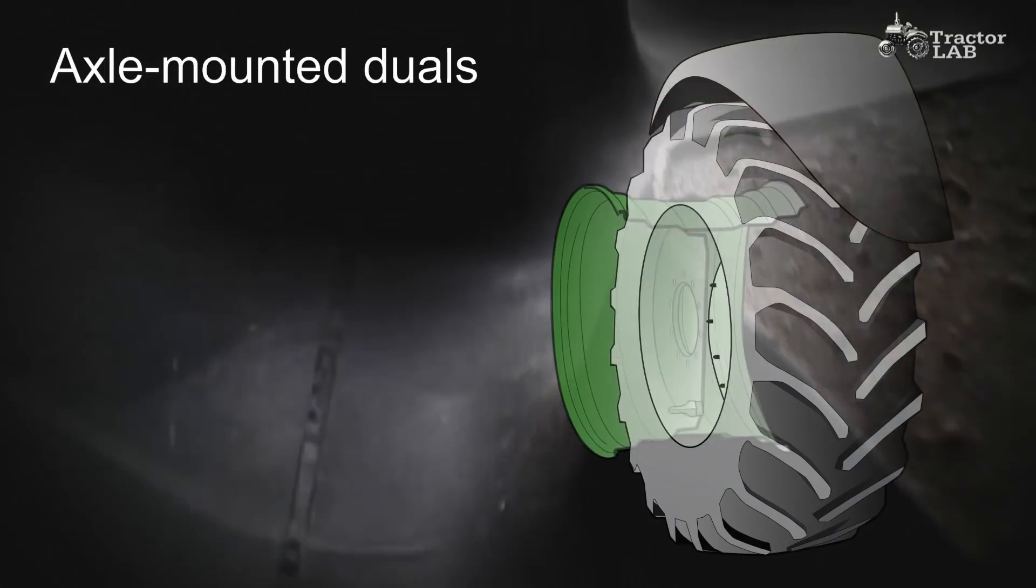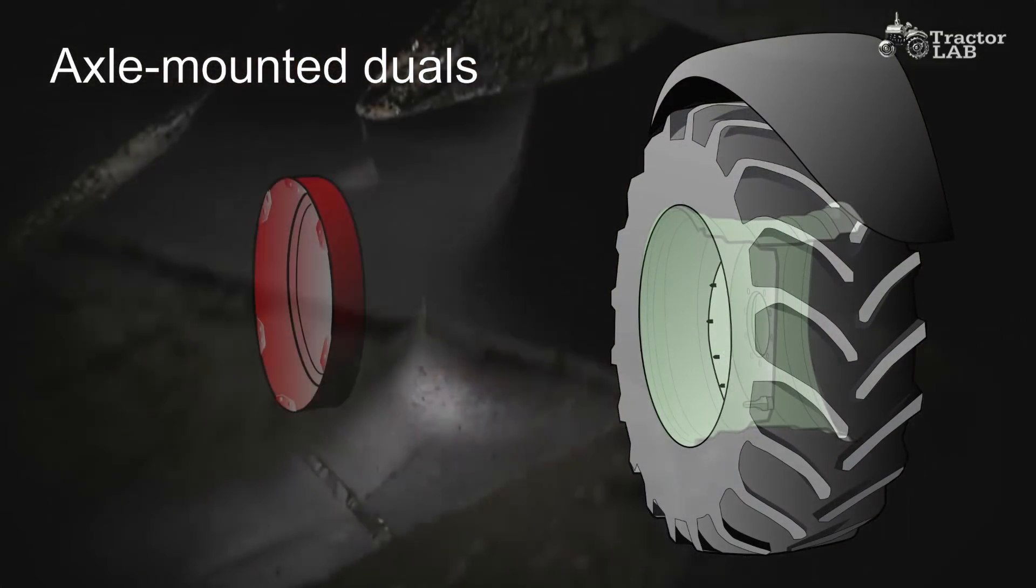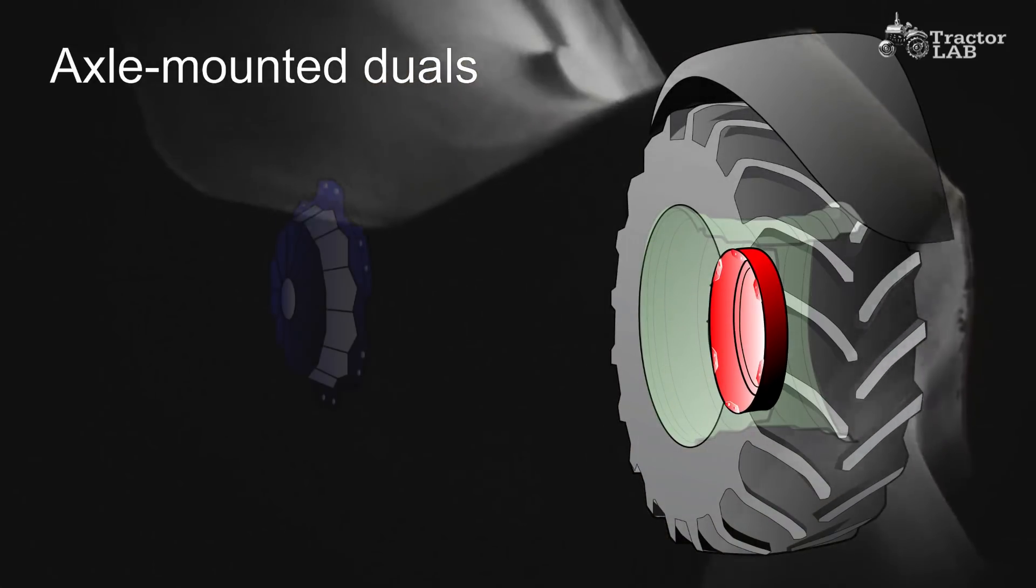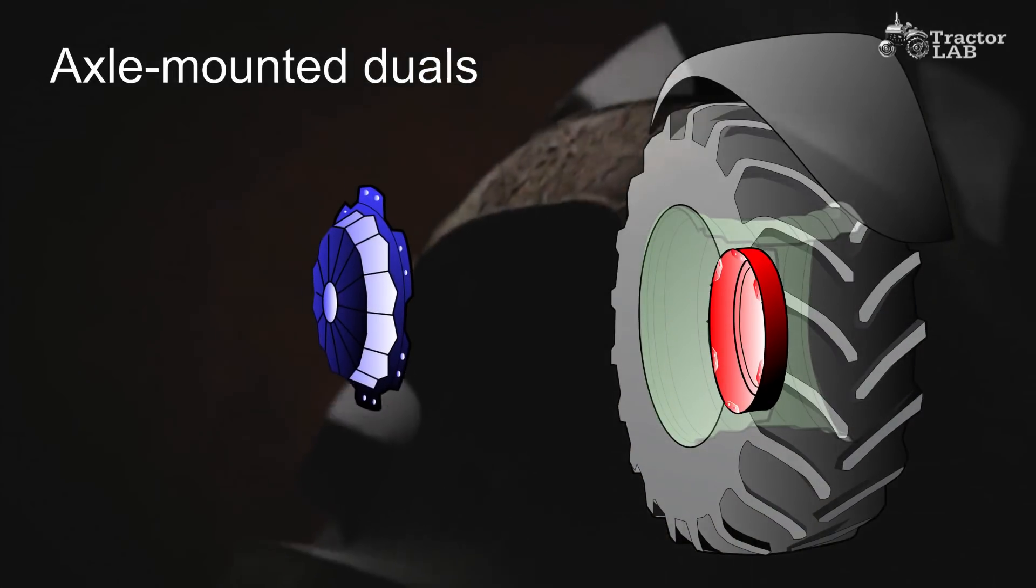Axle-mounted duals are more flexible because they allow you to change spacing. Axle-mounted duals are also better at transmitting high torque.